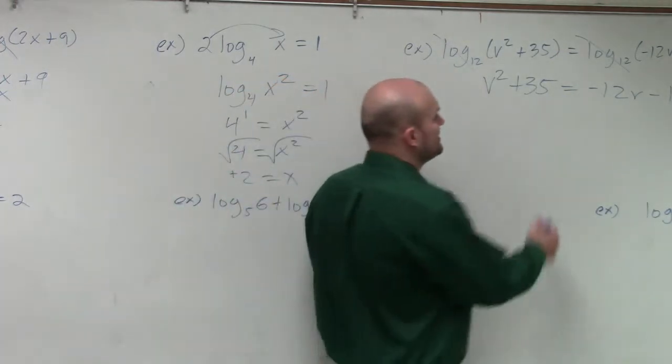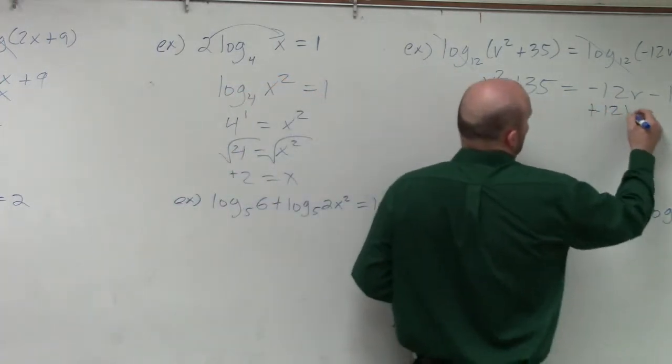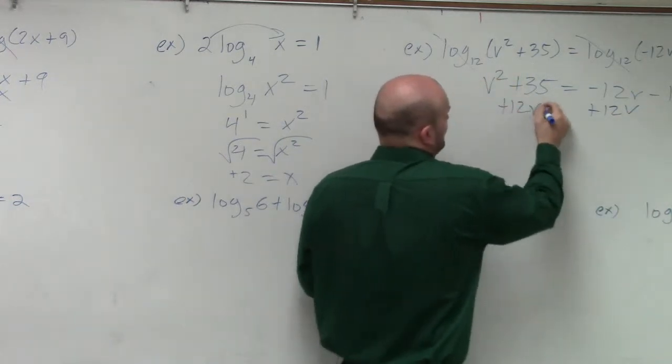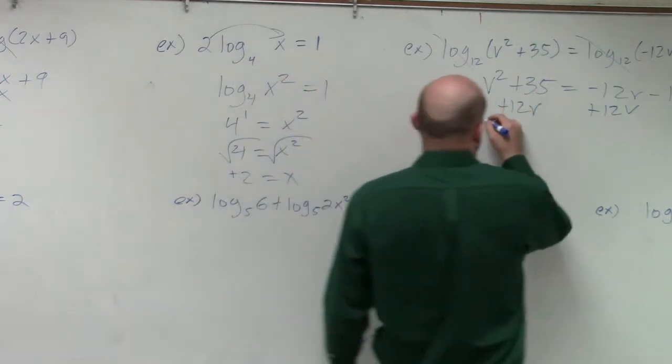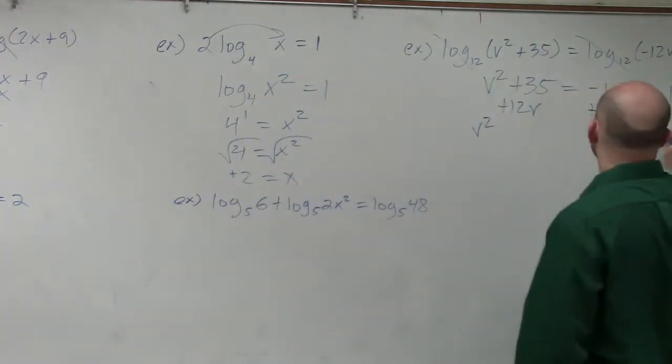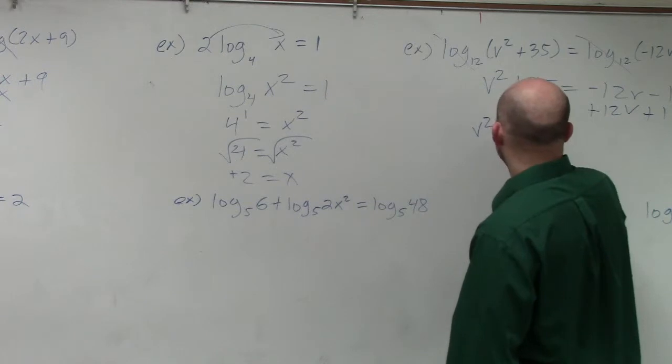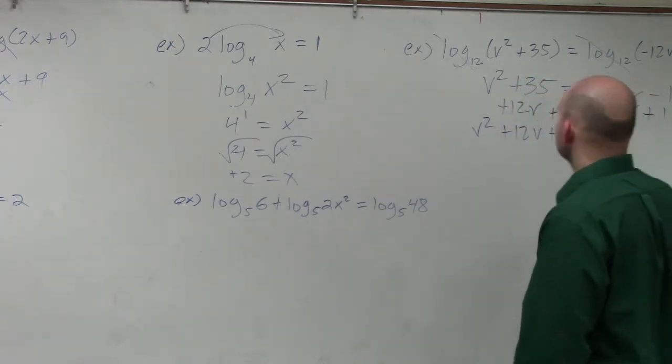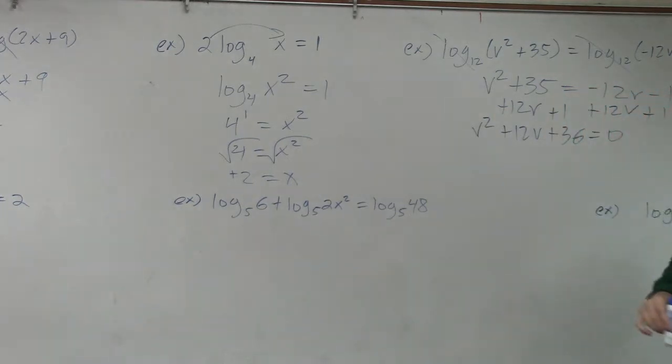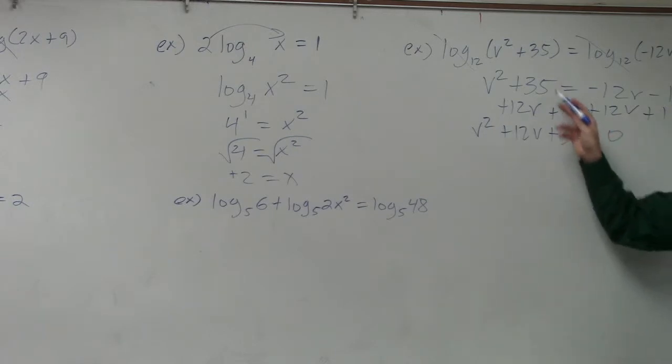So therefore we have to get everything to the same side. So I'm going to add 12v. Well, 12v is not like terms of v squared or 35. So it's v squared, and then I'll add 1 as well. So it's v squared plus 12v plus 36 equals 0. I added the 1 to both sides. So I could add the 1 to 36, as you guys can see. That's how that works.